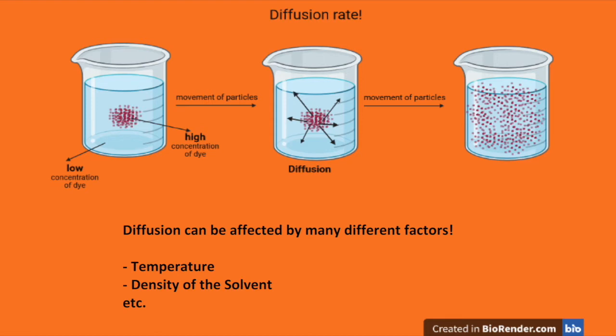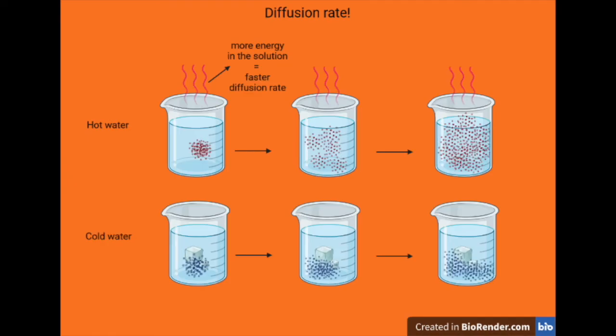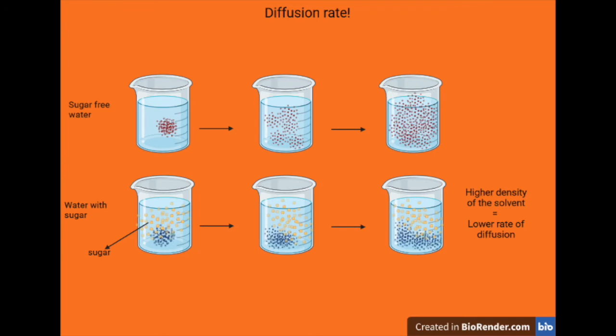So now we know that the water becoming fully colored is due to the diffusion rate. But why is the diffusion rate faster in hot water than in cold water, and in water without sugar compared to sugared water? This is due to the fact that diffusion can be affected by many different factors, like temperature and density of the solvent. When the temperature of the water increases, diffusion occurs at a faster rate, because there is more energy in the solution due to the high temperature, which causes the particles to move faster. Also, as the density of the solvent increases, diffusion occurs at a lower rate because there are now more particles in the water, making it harder for the dye particles to move. It's like running in an empty field versus in a crowd — it is much harder to run fast in a crowd because there are more obstacles.